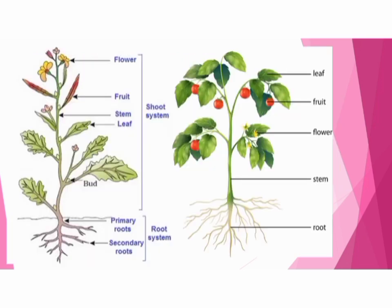In these two pictures also you can see some parts of a flowering plant. They are flowers, fruits, stem, leaves, buds, primary roots, secondary roots, shoot system and the root system. The tap root is also known as the primary root, and lateral roots are also known as the secondary roots.